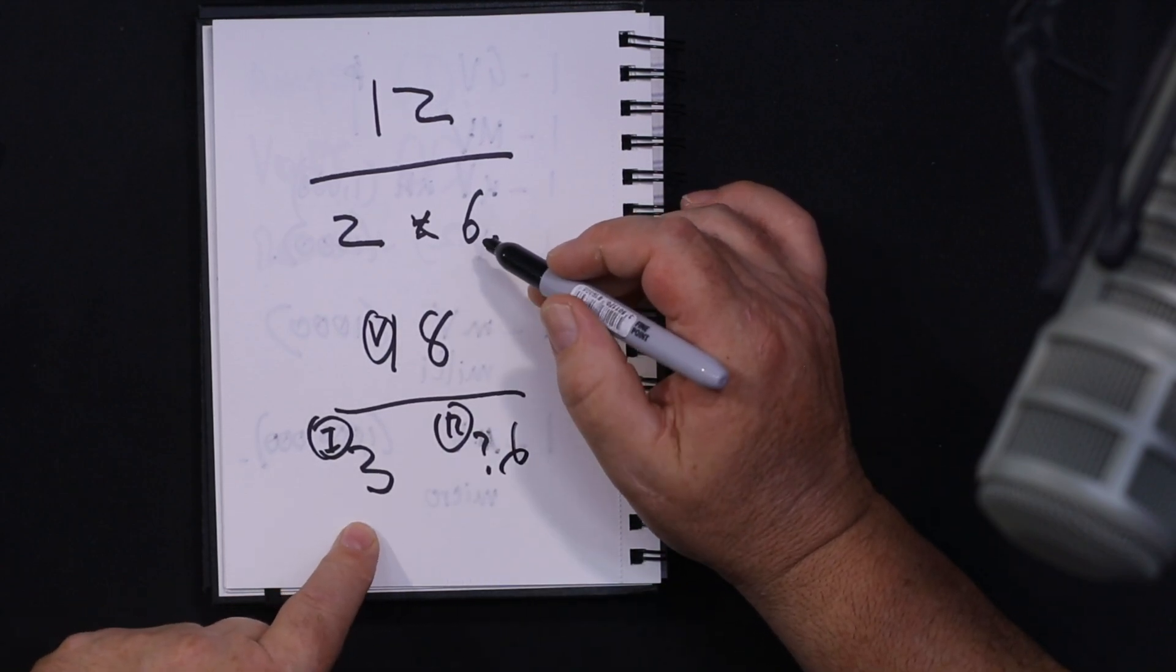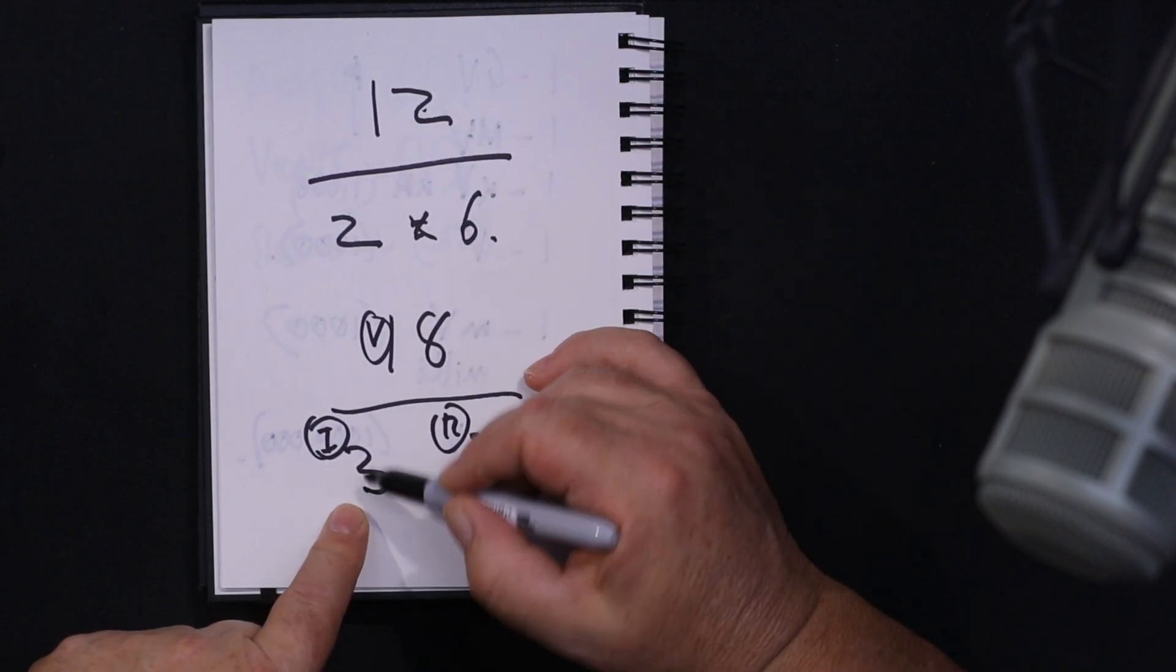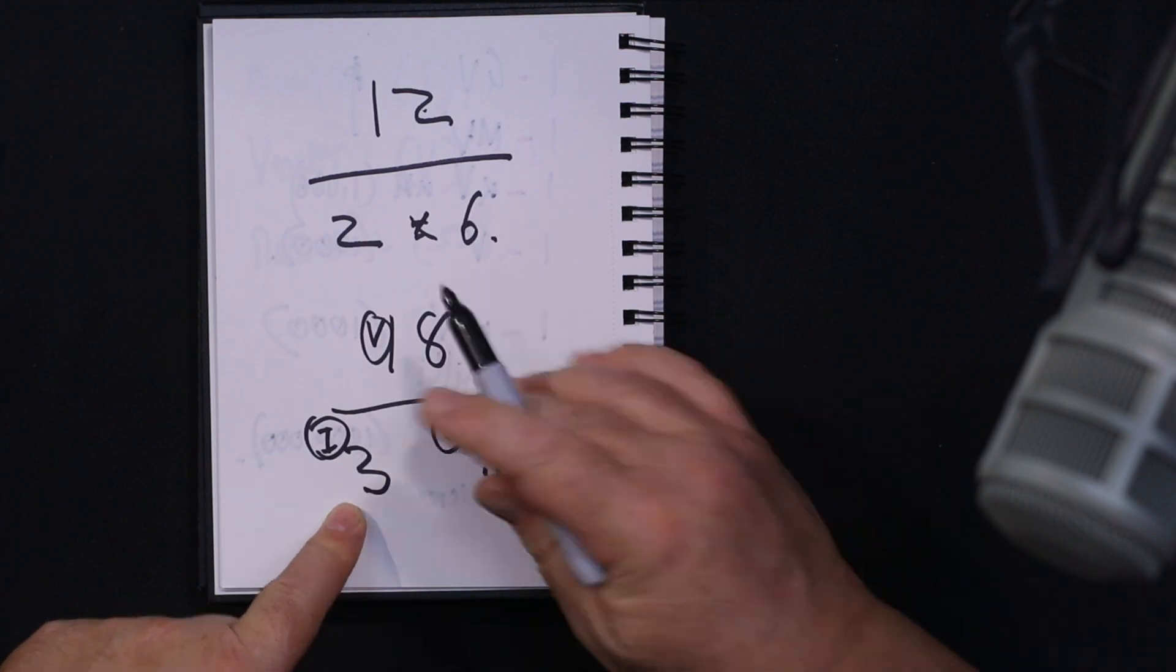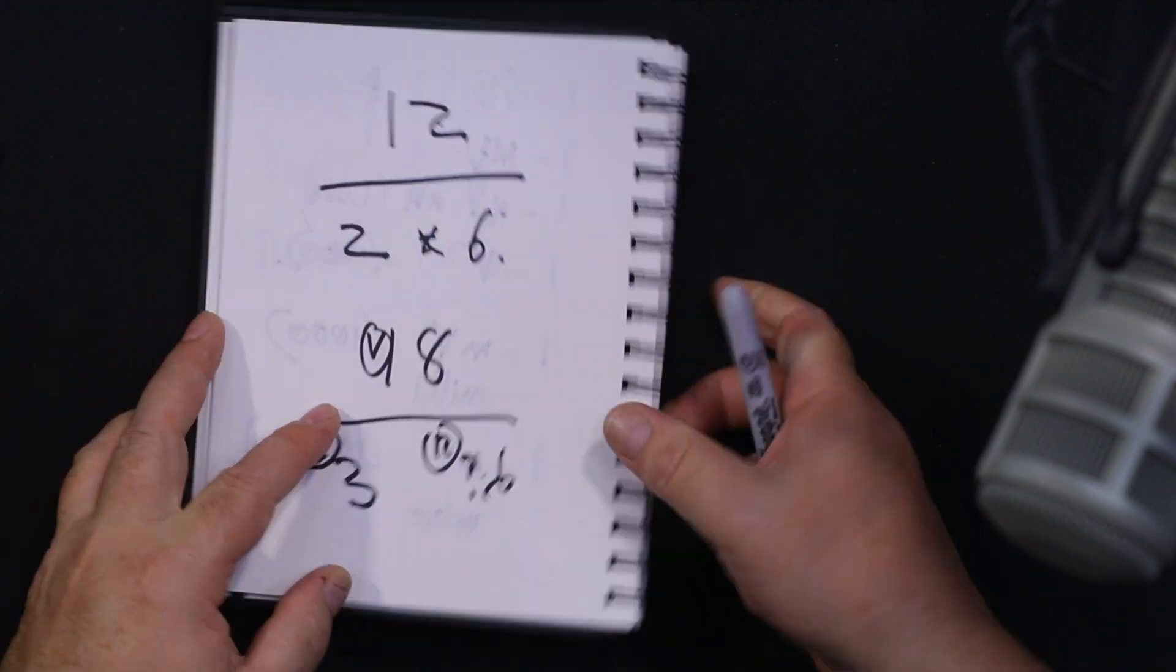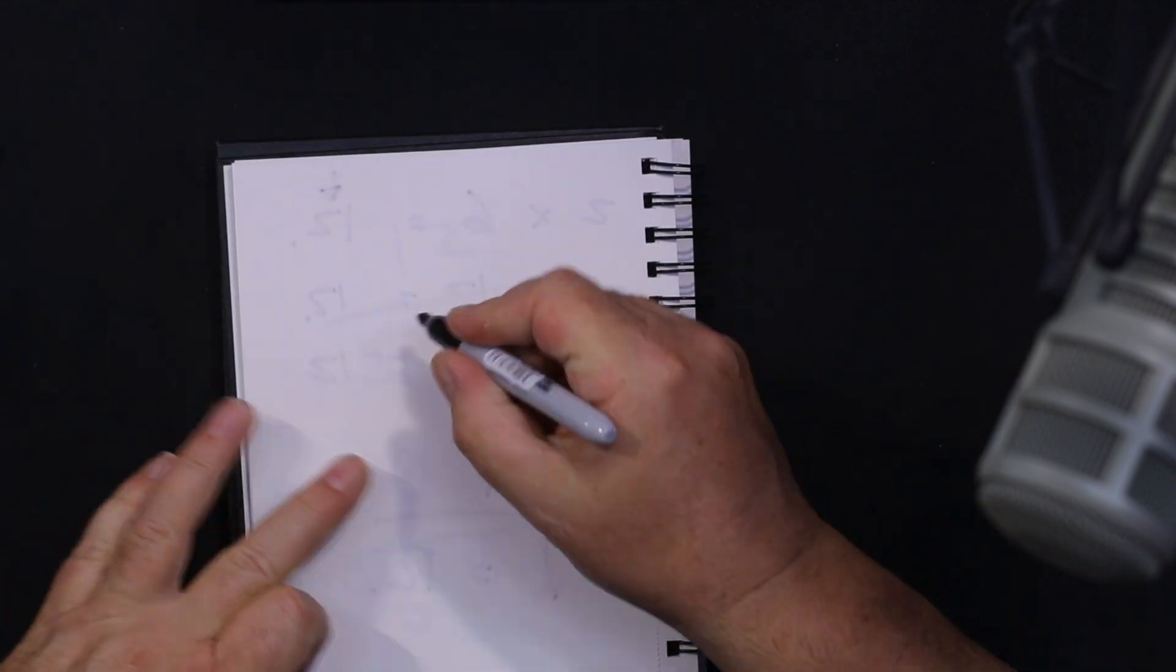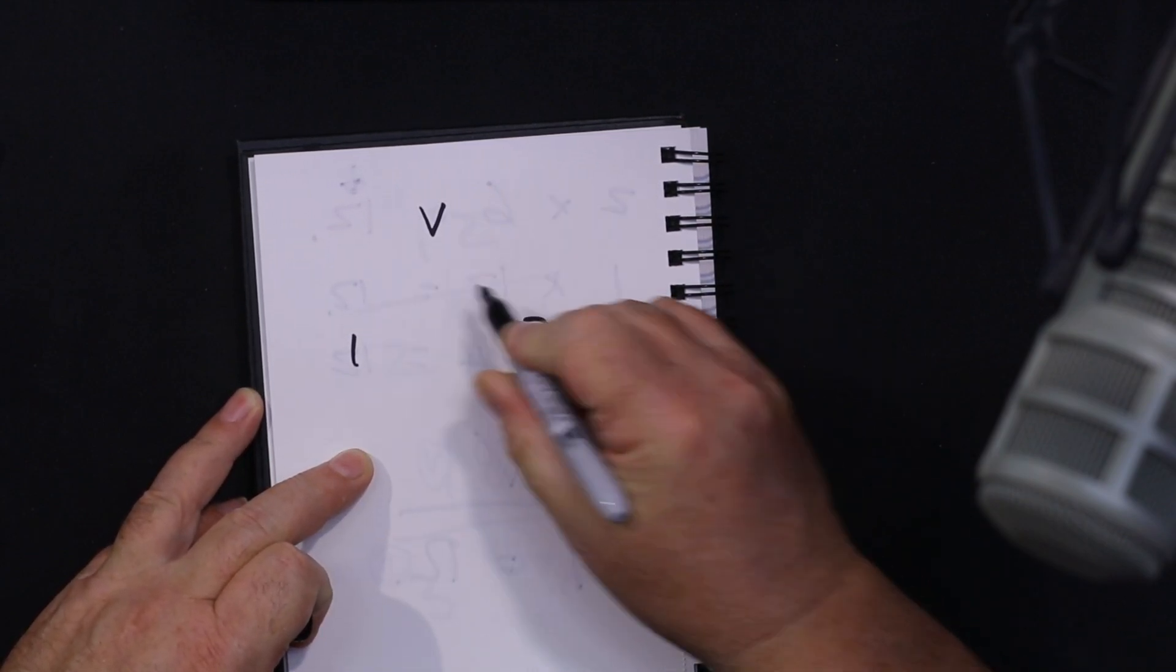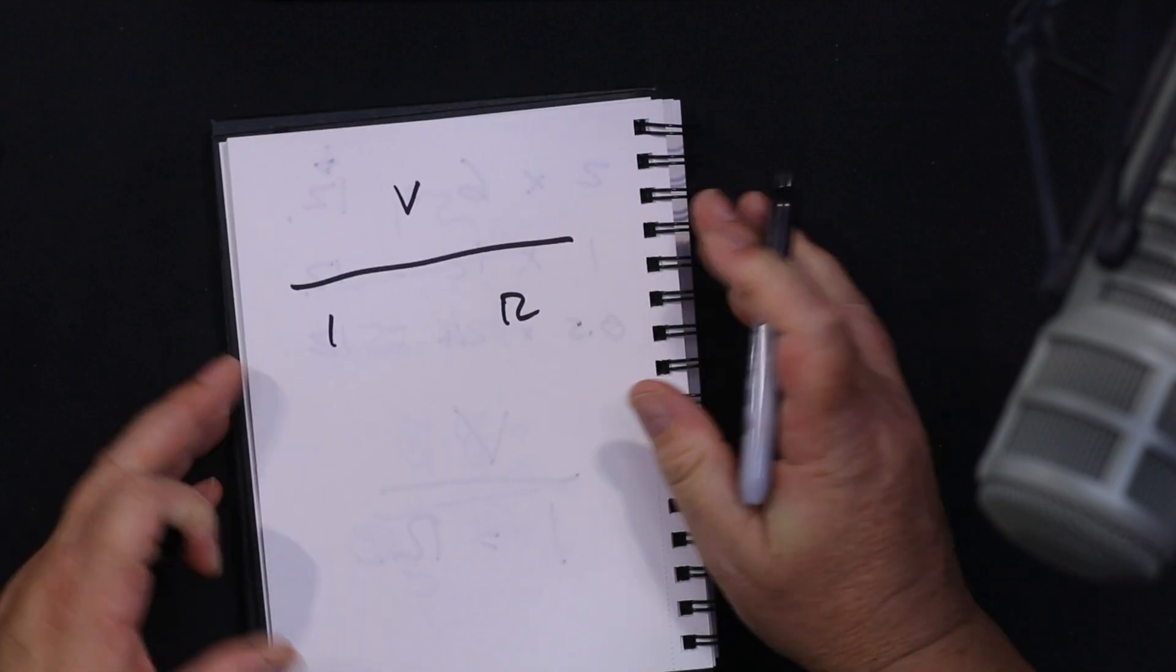Now do you notice that we've increased 12 to 18, so one of the numbers has had to move. V over I equals R, so it doesn't matter what number you put anywhere. I'm not going to read your mind now, but we'll just do V over I equals R again and you could invent a number.